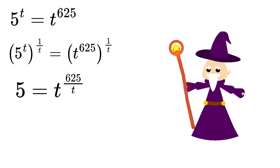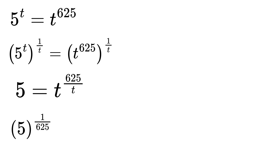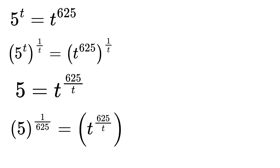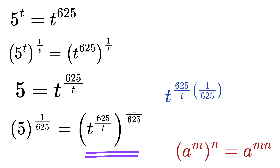Now we will do the second trick. Let's again raise both sides, but this time to the power 1 over 625. So now we take 5 and raise it to 1 over 625, and we take the right side, which is t raised to 625 over t, and raise that whole thing to 1 over 625. Once again, use the same power rule.